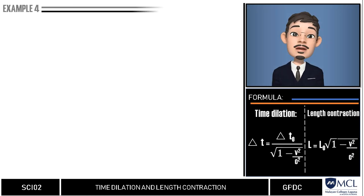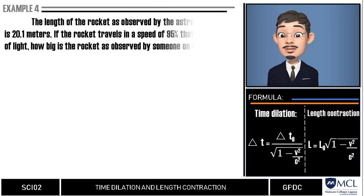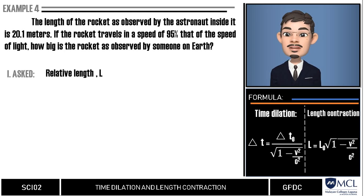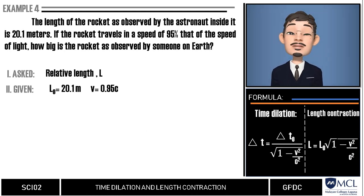we have the length of a rocket as observed by the astronaut inside it is 20.1 meters. If the rocket travels in a speed of 95% that of the speed of light, how big is the rocket as observed by someone on Earth? In this question, we are asked to calculate for the size or length of the rocket as seen on Earth. The proper length and the speed of the traveler as measured by the percentage of the speed of light are given.